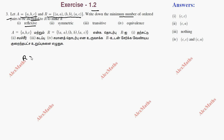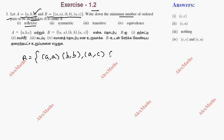Our relation is already {(A,A), (B,B), (A,C)}. Starting with (A,A), (B,B), and (A,C).